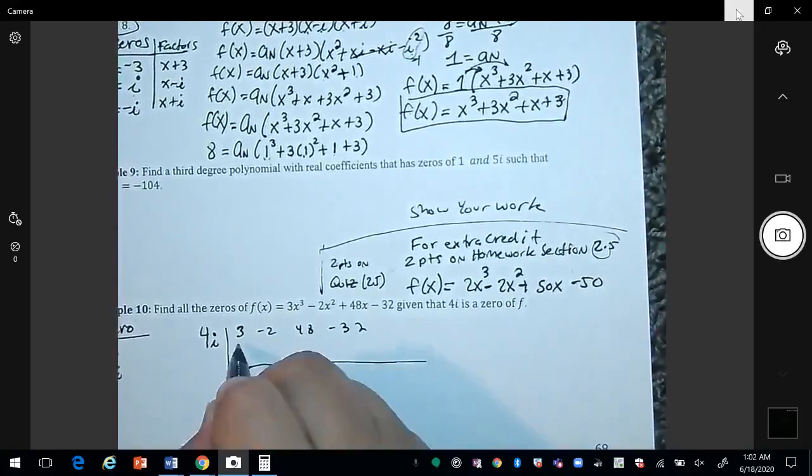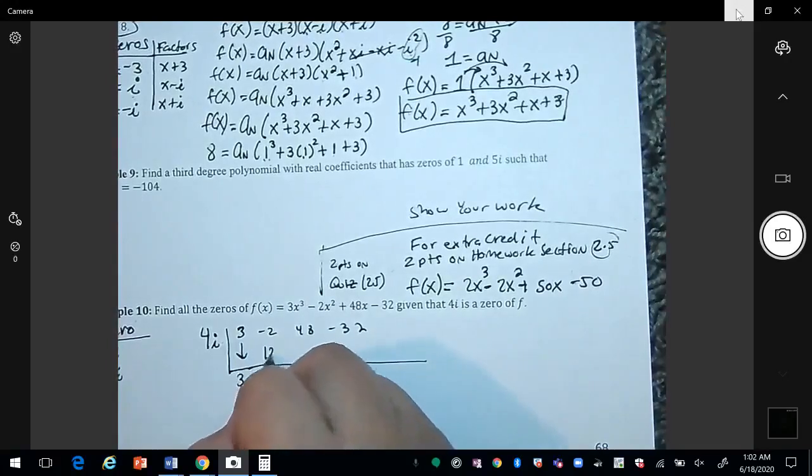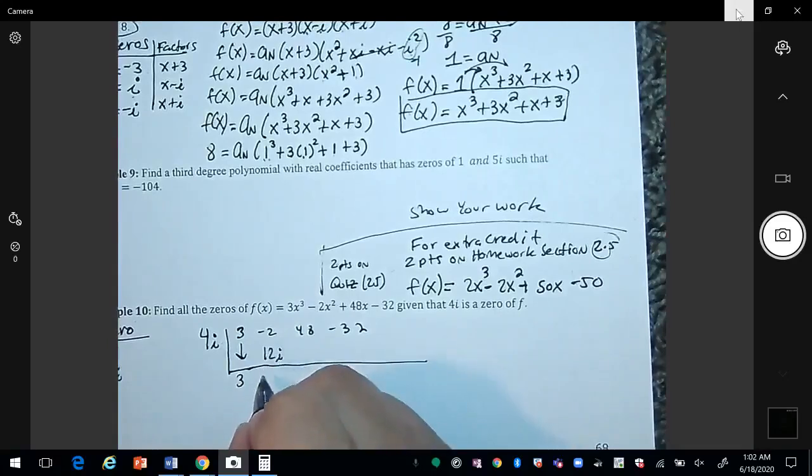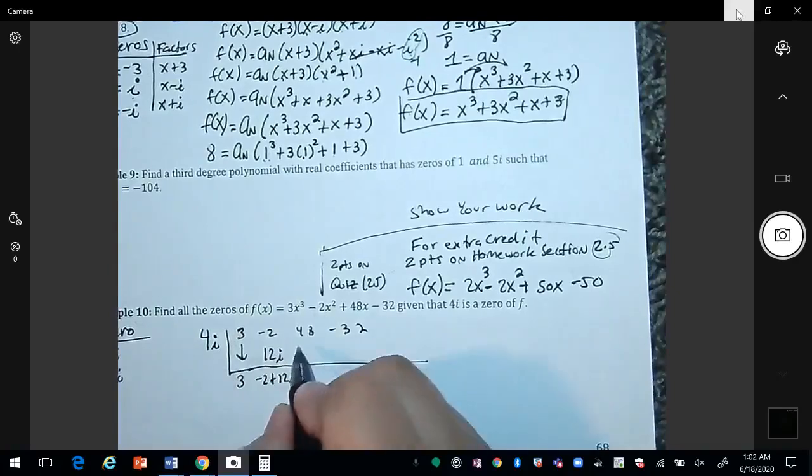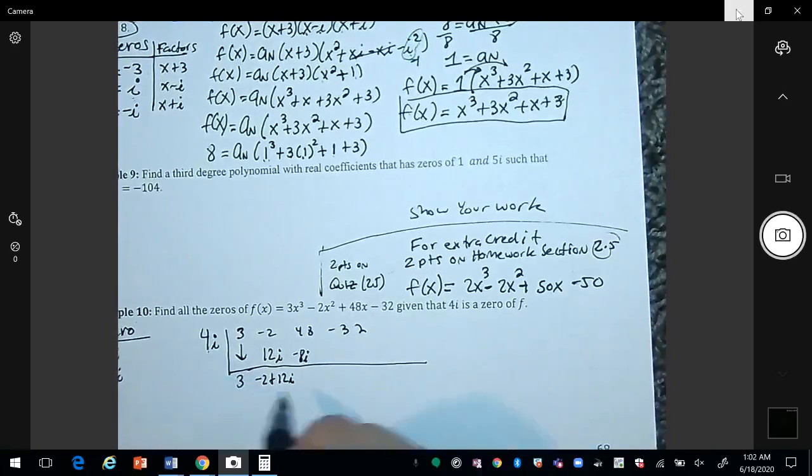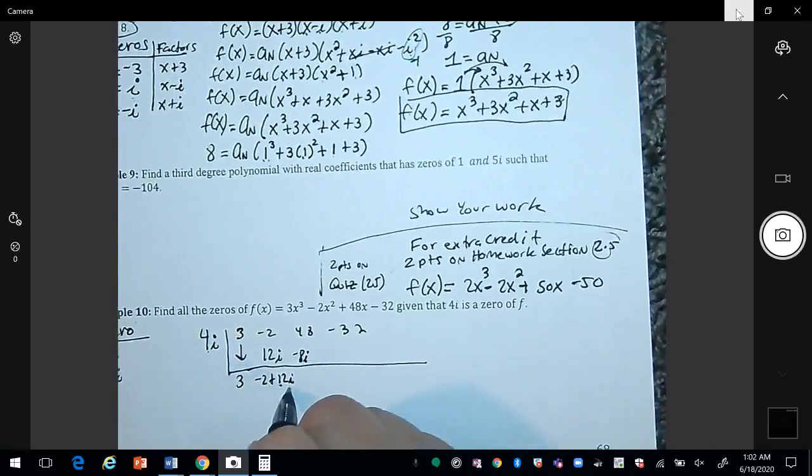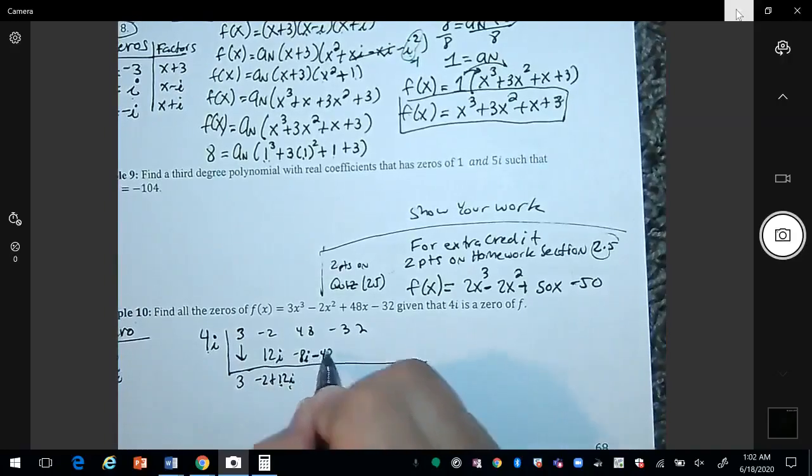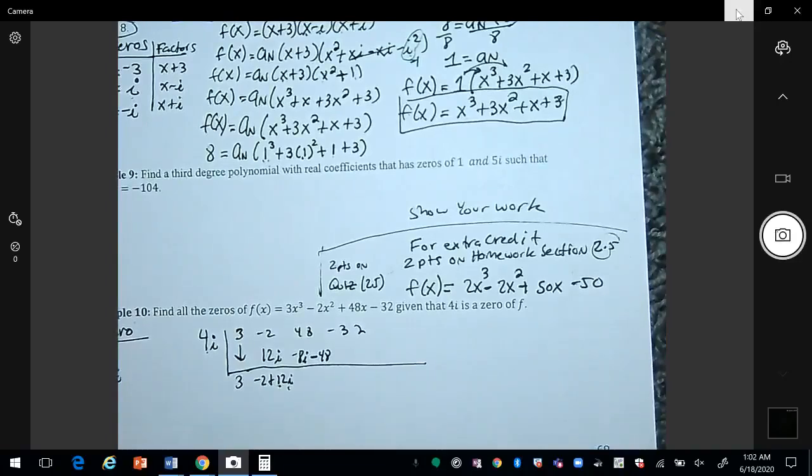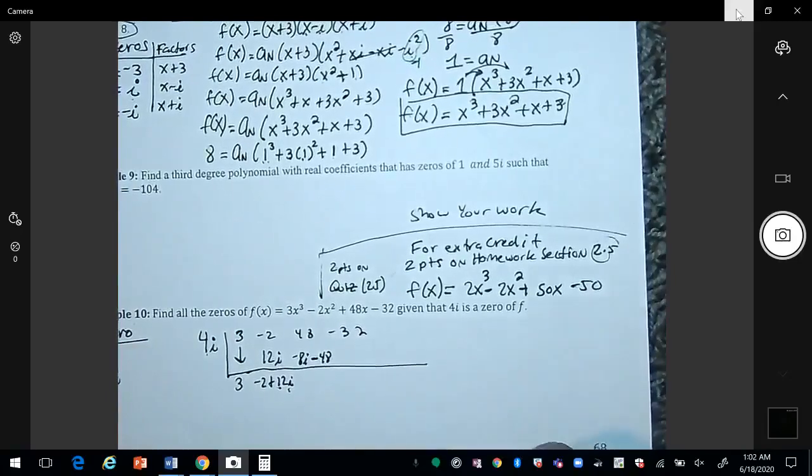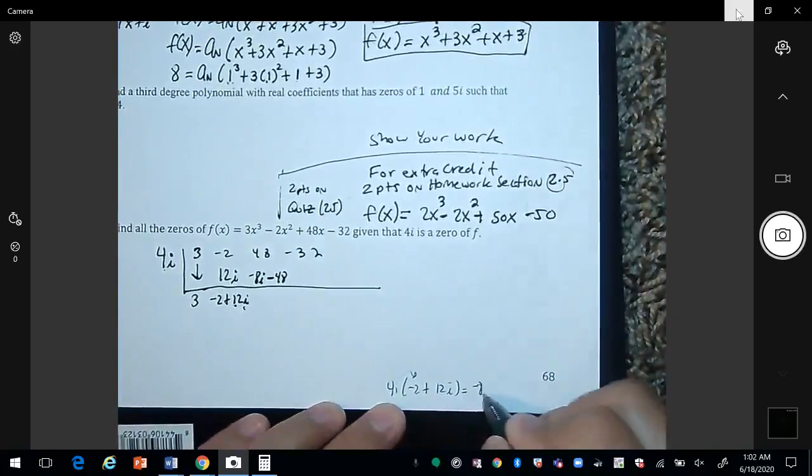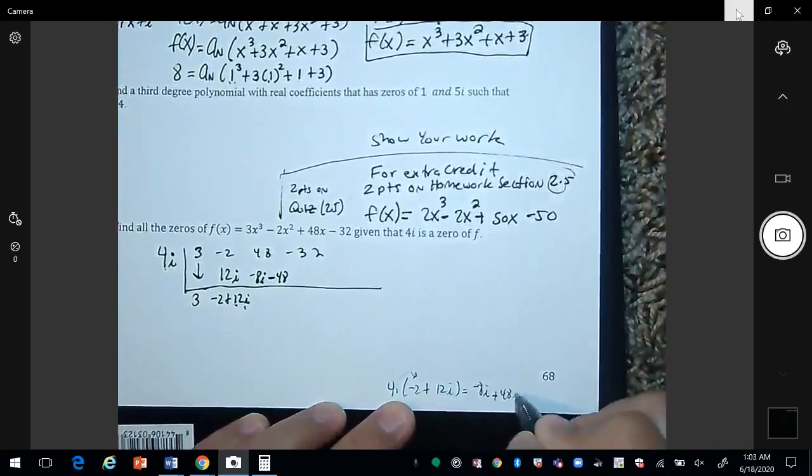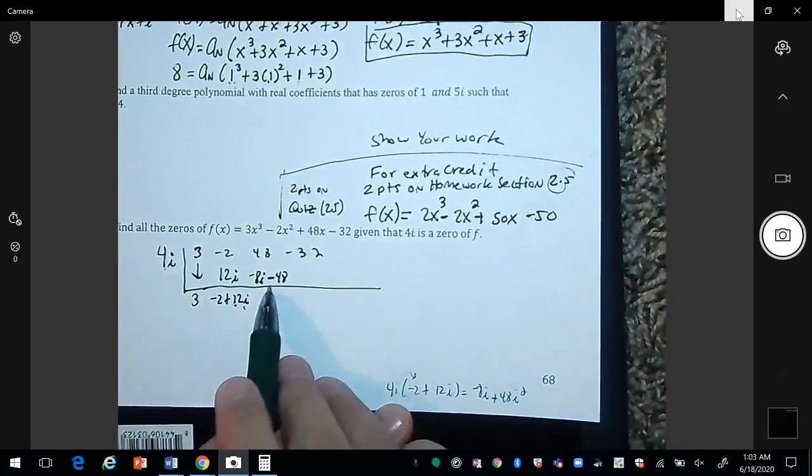Bring down the 3. 4i times 3 is 12i. Negative 2 plus 12i, and then multiply that times 4i. So 4i times 2 is negative 8i, and 4 times 12 is 48 times i times i is i squared. I squared can be replaced by a negative 1, so we get negative 48. So again, 4i times negative 2 plus 12i gives us negative 8i plus 48i squared. Replace i squared with a negative, and that's how we got this number over here.